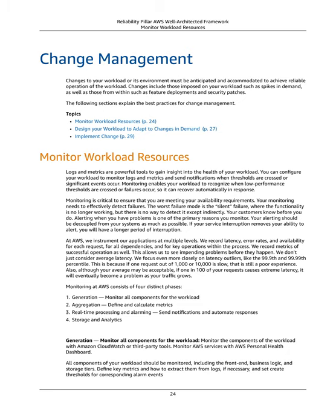Alerting when you have problems is one of the primary reasons you monitor. Your alerting should be decoupled from your systems as much as possible — if your service interruption removes your ability to alert, you will have a longer period of interruption. At AWS, we instrument our applications at multiple levels. We record latency, error rates, and availability for each request, for all dependencies, and for key operations within the process. We don't just consider average latency — we focus more closely on latency outliers like the 99.9th and 99.99th percentile. This is because if one request out of 1,000 or 10,000 is slow, that is still a poor experience. Monitoring at AWS consists of four distinct phases.